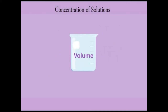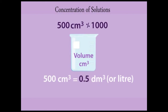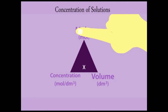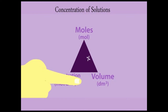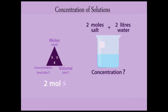Volumes are often measured in cubic centimeters. 1000 cm³ equals 1 dm³, which equals 1 liter. So 500 cm³ = 0.5 dm³. To find moles, multiply concentration by volume; to find concentration, divide moles by volume. For example, 2 moles of salt dissolved in 2 liters gives a concentration of 2 ÷ 2 = 1 mol/dm³.